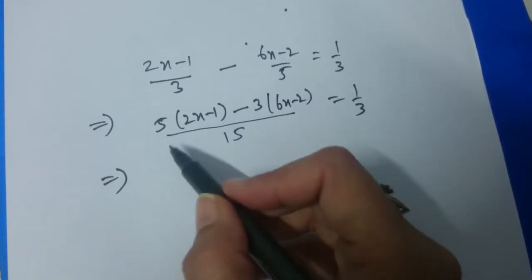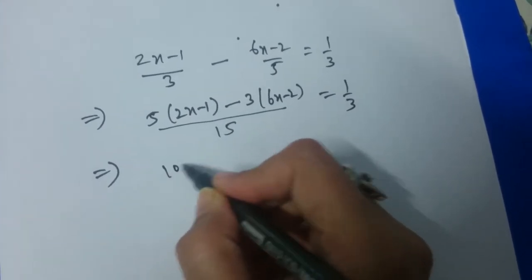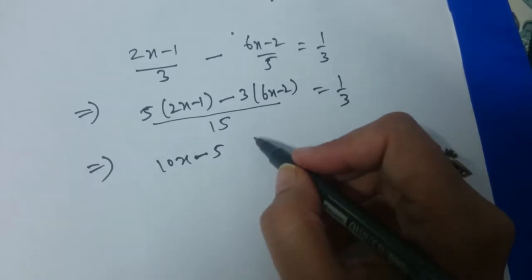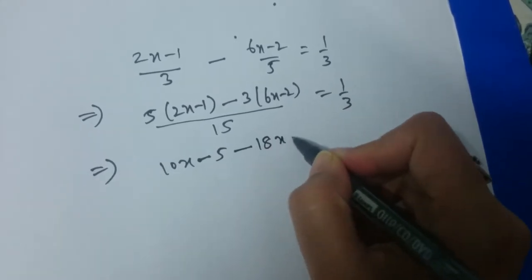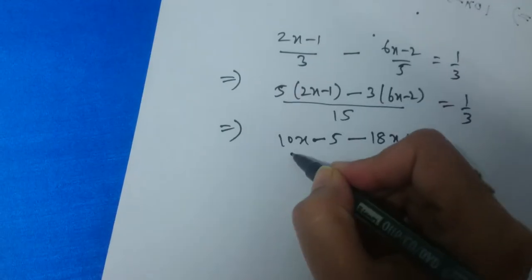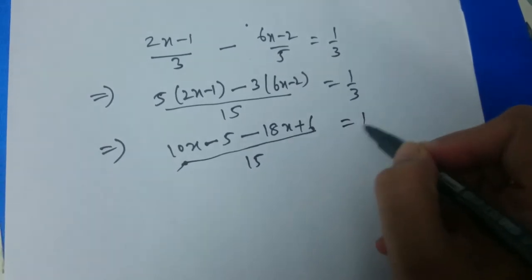This implies, now simplify this: 5 into 2x minus 1 is 10x minus 5, and minus 3 into 6x minus 2 will be minus 18x minus 3 into minus 2 plus 6, divided by 15 is equal to 1 by 3.